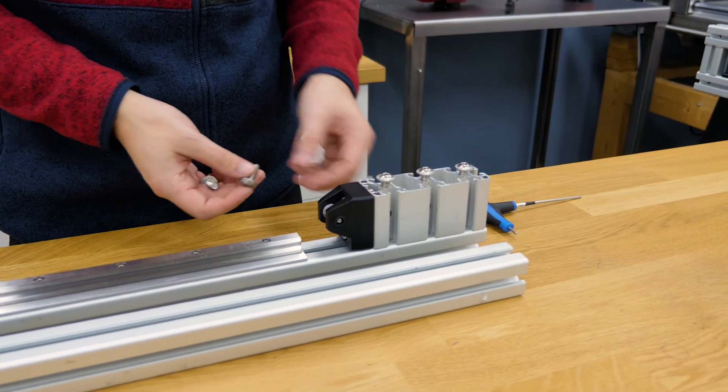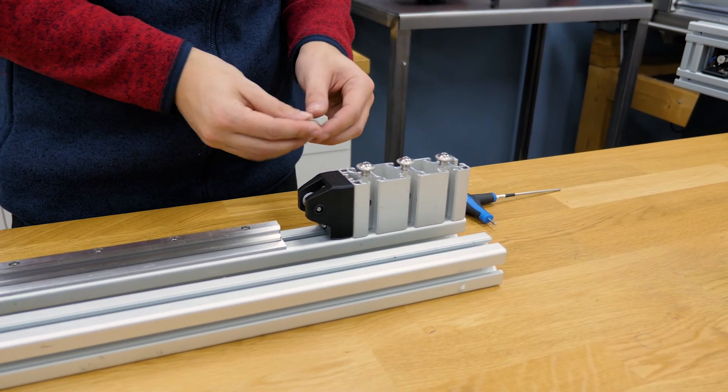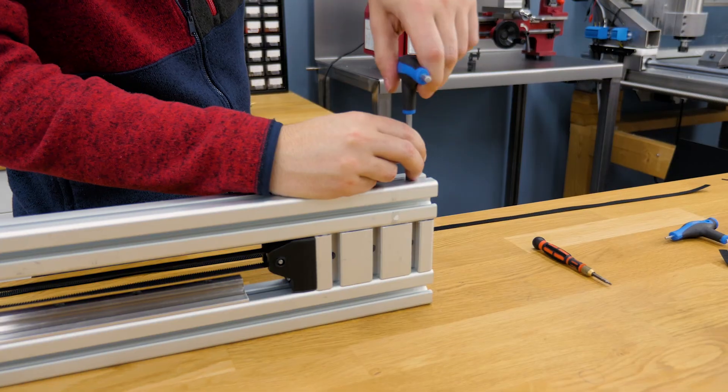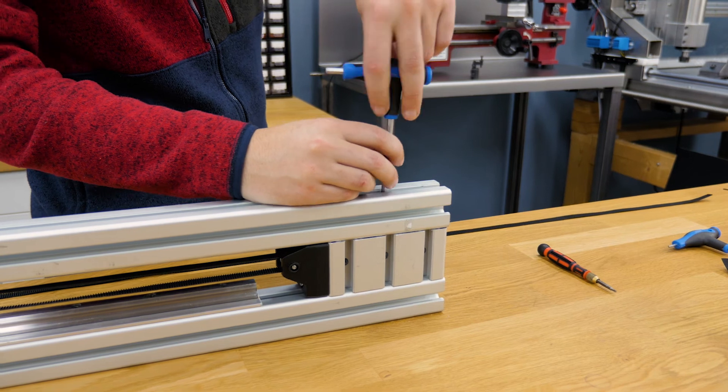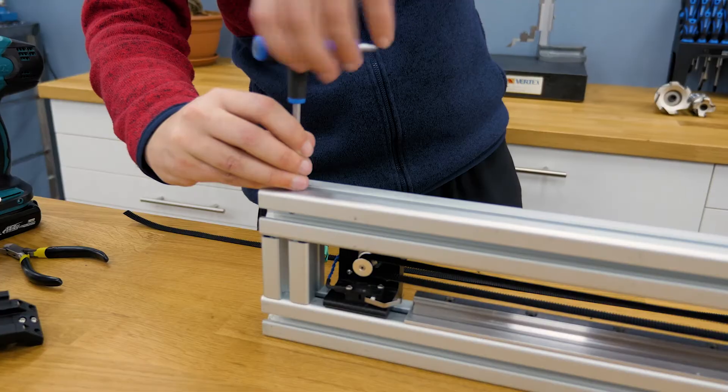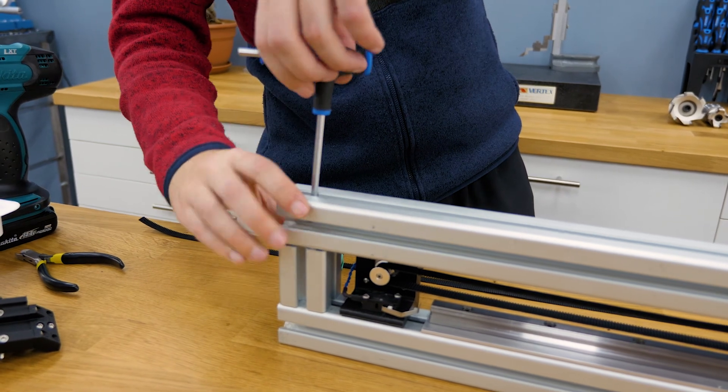Before I close the frame I insert three M8 bolts in these slots that I will use for the final assembly of the 3D printer. After that I close the frame with a second long part of 40-40 aluminium extrusion that is bolted into place with four M8 bolts.